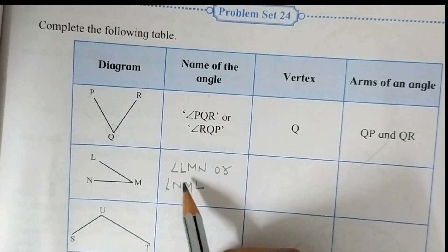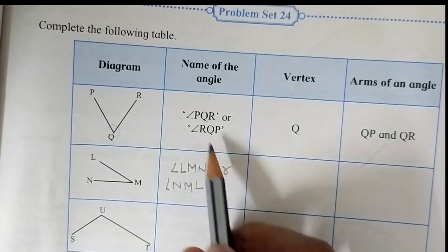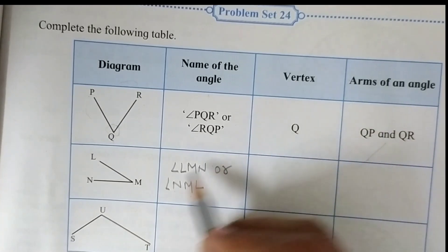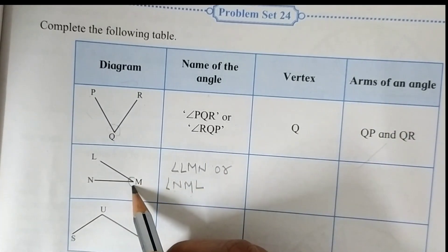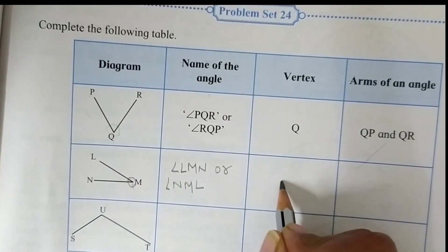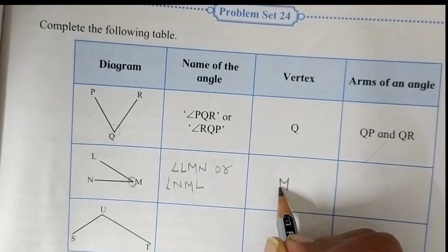Remember our vertex is always in the middle when we write the name of the angle. So here the vertex is M. These two lines are joining to the M point. So our vertex is M. Just write here M.